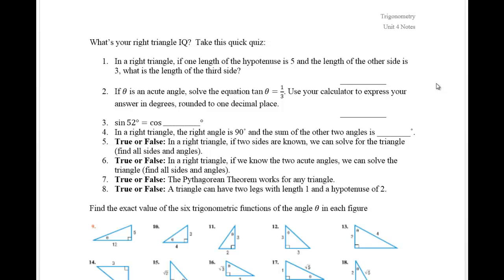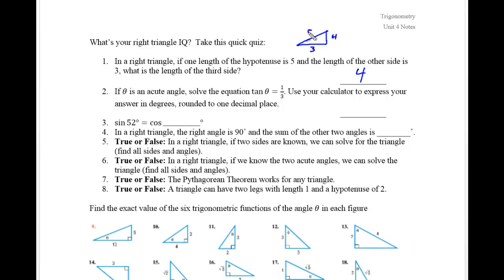Hopefully you did that little self-test. Let's go through each of these answers. Problem number one: in a right triangle, if the hypotenuse is five and one side is three, what is the length of the third side? The answer is four, because of the 3-4-5 Pythagorean triple. Three squared plus four squared equals five squared, or 9 plus 16 equals 25. So we'll be doing Pythagorean theorem today.